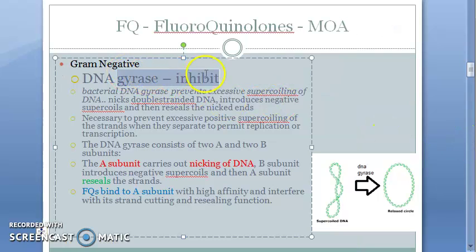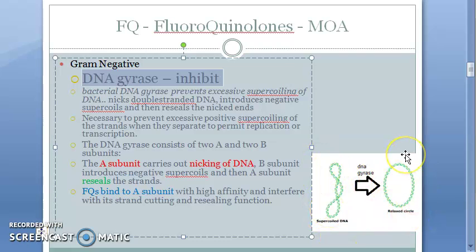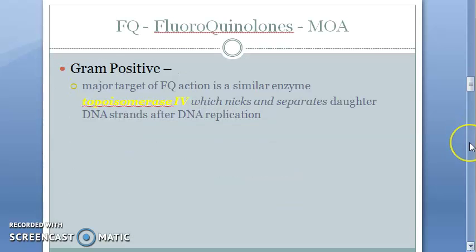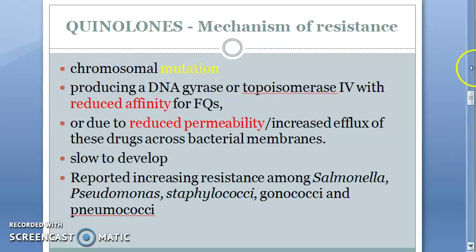Fluoroquinolones inhibit DNA gyrase, so the DNA will not be able to relax — it will always be in a supercoiled fashion. The relaxed form is necessary for replication and transcription, so there can be no replication and transcription, hence fluoroquinolones become bactericidal.